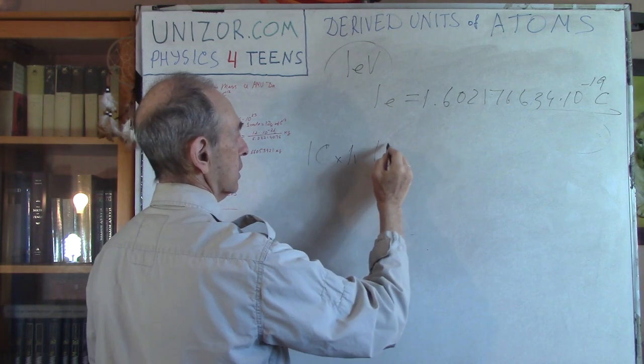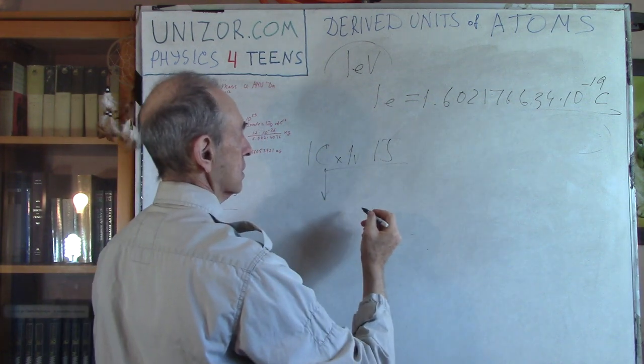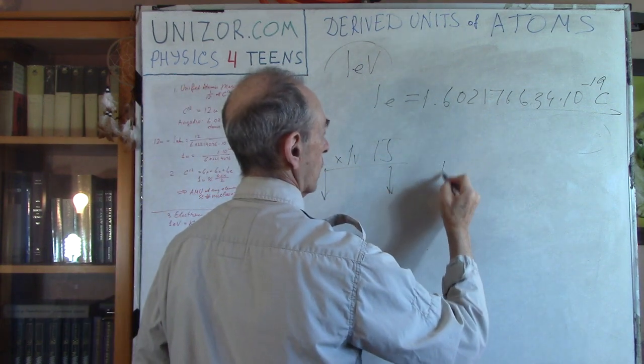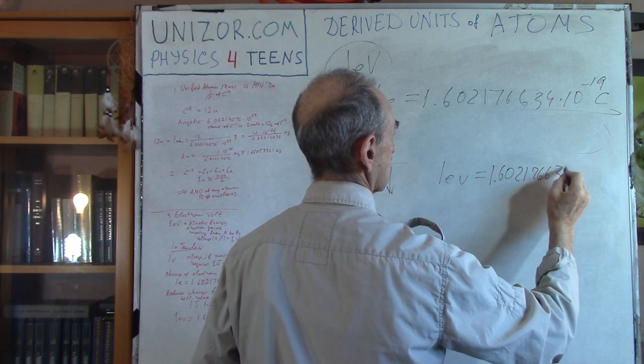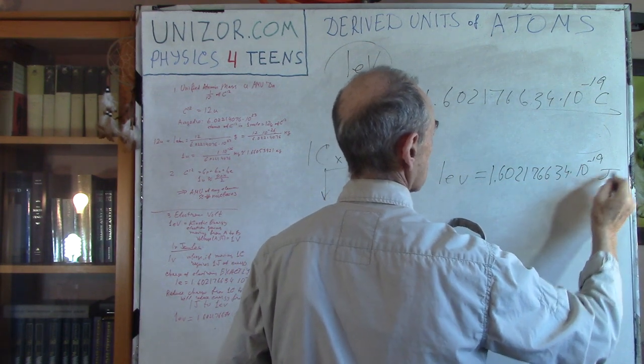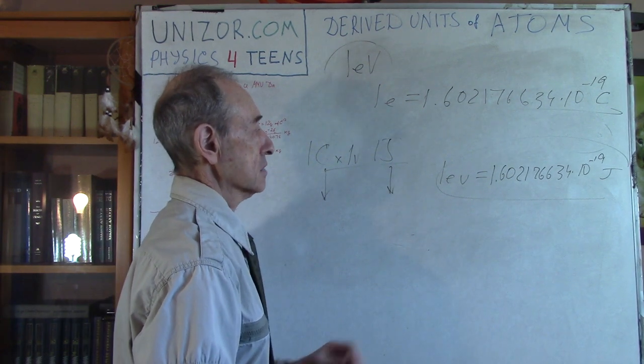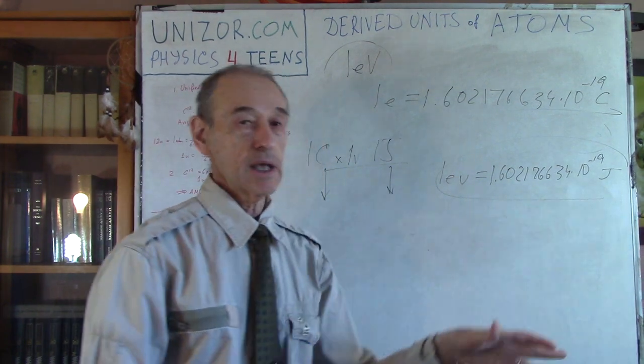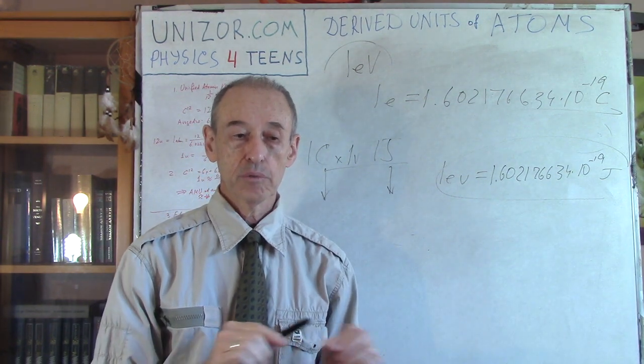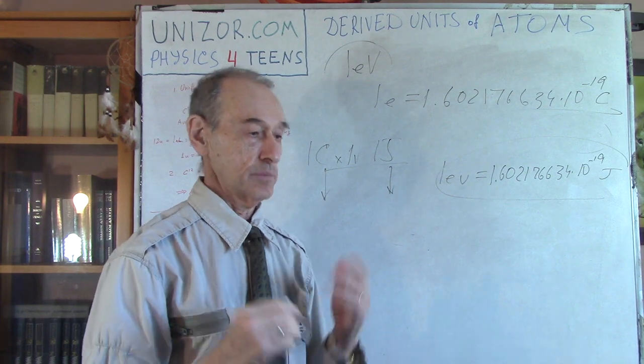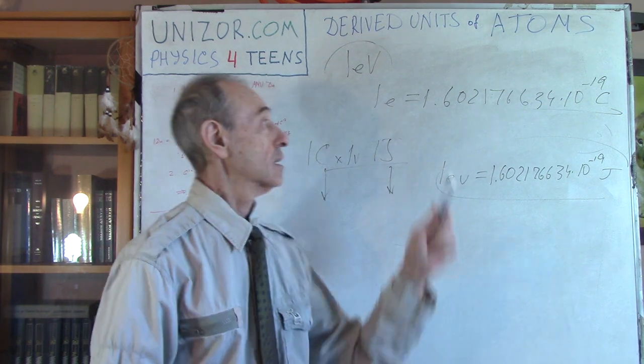Basically that's it. If this is the number, this is basically the ratio between electron charge and one Coulomb, that means that we have to divide our one Joule. Remember, one Coulomb, one volt is one Joule, right? So basically, since we reduce this to this, we have to reduce by the same number. So one electron volt is equal to this number, 1.60217662634 times 10 minus 19 Joules. So that's the connection between electron volt and Joules.